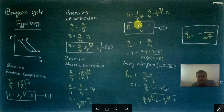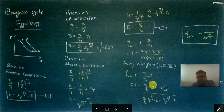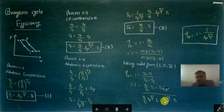Substituting these values: efficiency equals 1 minus (T4 minus T1) divided by (T3 minus T2). Replacing T4 with (V3/V2)T1, T3 with (V3/V2)Rp raised to gamma-1 upon gamma into T1, and T2 with Rp raised to gamma-1 upon gamma into T1. Taking T1 common in numerator and denominator, the (V3/V2 minus 1) terms cancel, and the final result is 1 minus 1 upon Rp raised to gamma-1 upon gamma.